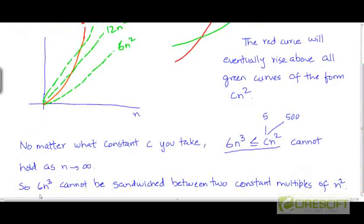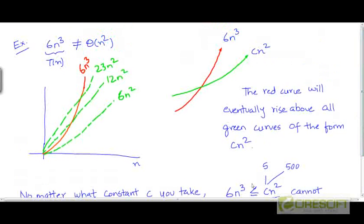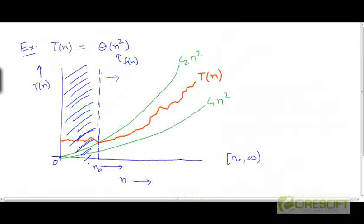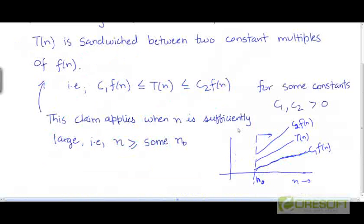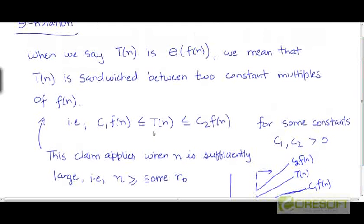What this means is that 6n³ can never be sandwiched between two constant multiples of n². So going back to the definition of the theta notation, we want that T, which is 6n³ here, should be sandwiched between two constant multiples of f. f is n² for our example. So this part of the inequality is easy to satisfy.